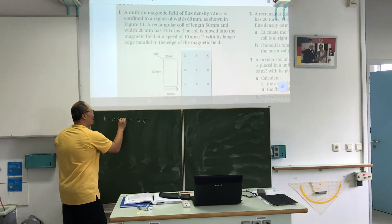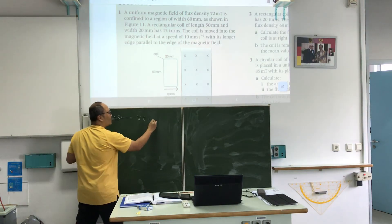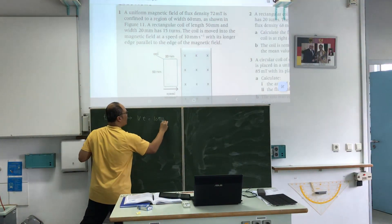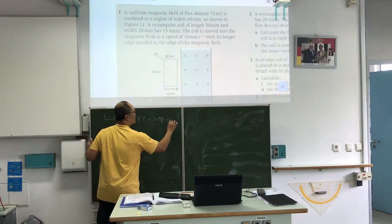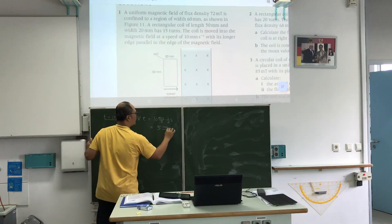Now, you want to consider if T is 0.5 second. V times T is 10 millimeter per second times 0.5 second, which is 5 millimeter per second.